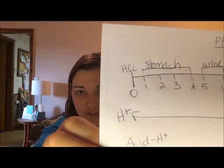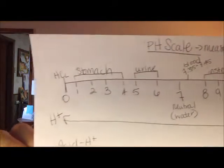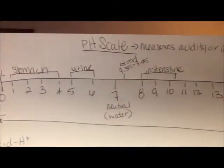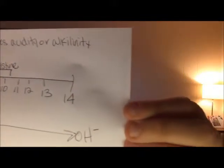I drew the pH scale on a piece of paper — that's the acid side. You can pause the video if you want to look at it. The most acidic substance is hydrochloric acid, which is a zero on the scale.